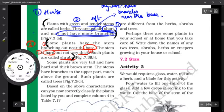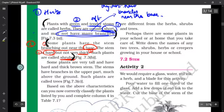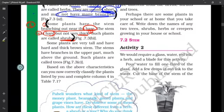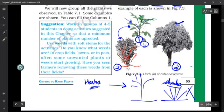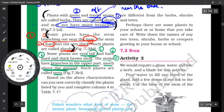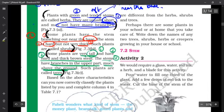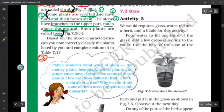Now let's go to trees. Trees are very tall. Second, they have hard and thick brown stems. Third point, their stems have branches in the upper part, much above the ground. This is very important to write: much above the ground. Such plants are called trees. Their branches come very high up from the ground. Mark this definition - this is your complete definition of trees. This is very important.